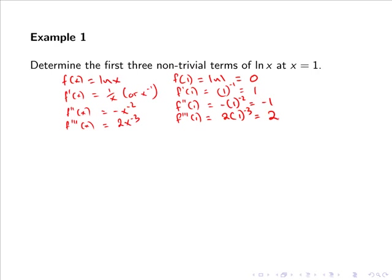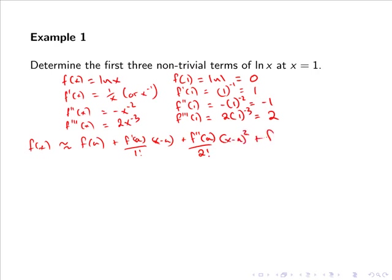So now we have found the first three nonzero terms for the Taylor series of ln of x at x equals 1. The Taylor series is given by f of a plus f dash of a over 1 factorial by x minus a, plus f double dash of a over 2 factorial by x minus a squared, plus f triple dash of a over 3 factorial by x minus a cubed, where a in this case equals 1.